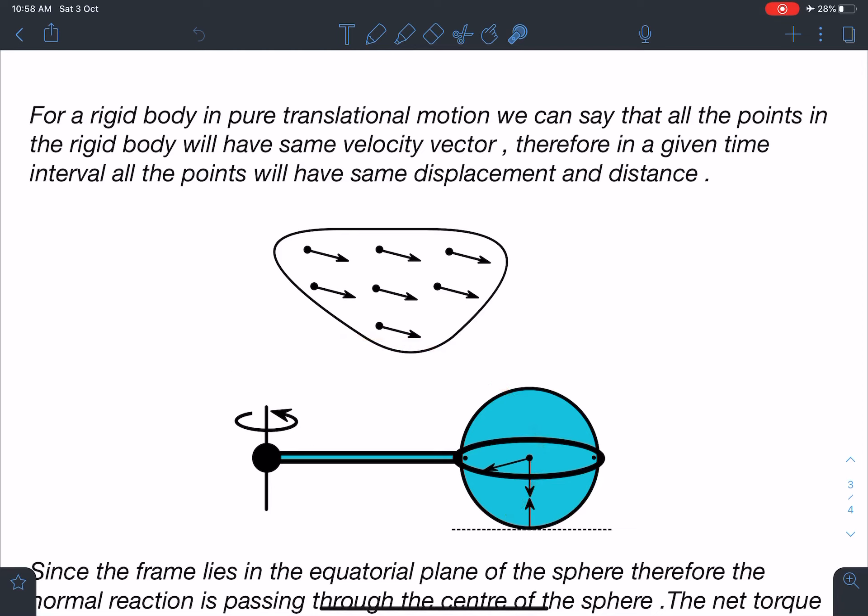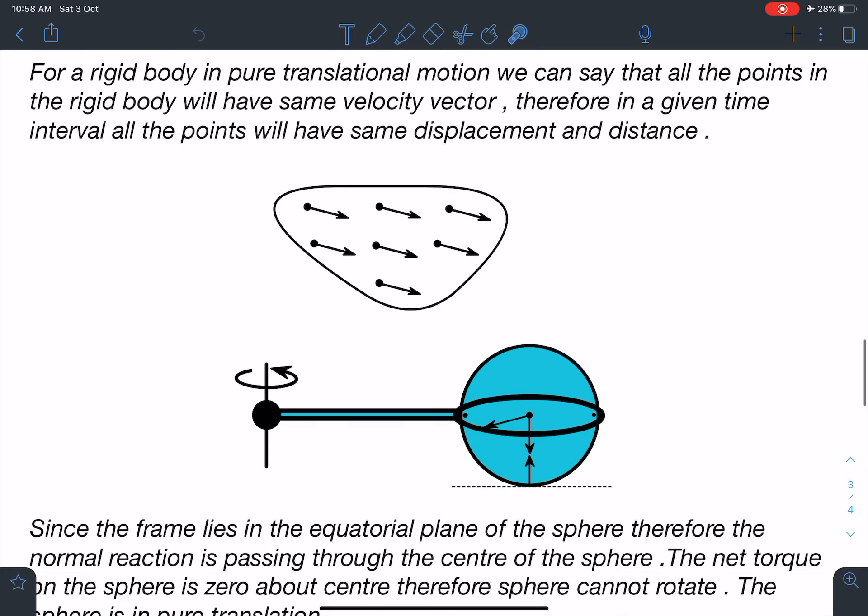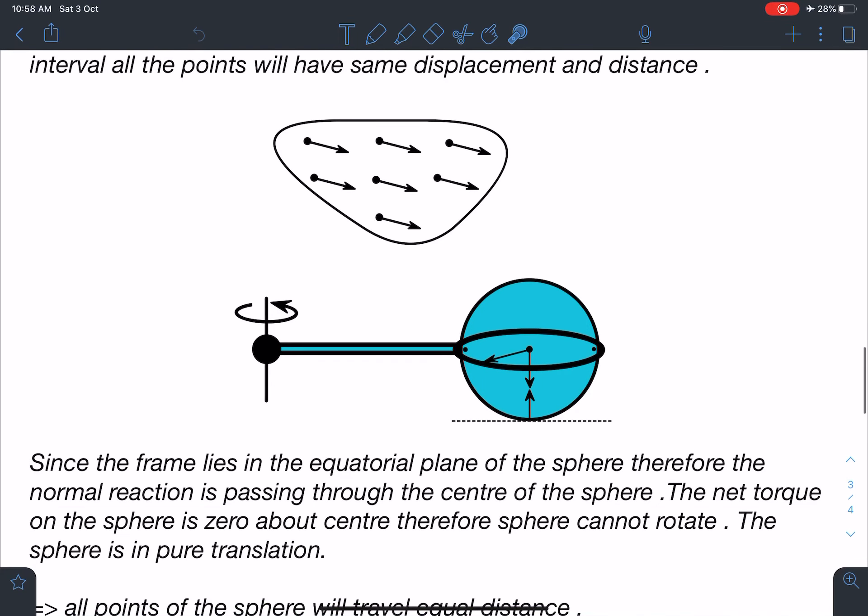As this sphere will move, center of the sphere is going to move in a circle of radius L plus R. Since the frame lies in the equatorial plane of the sphere.